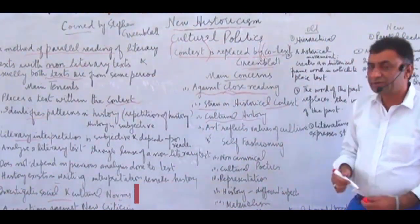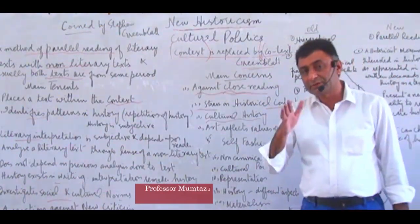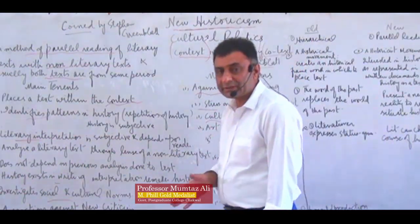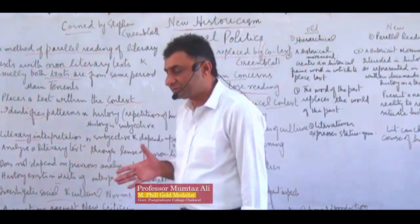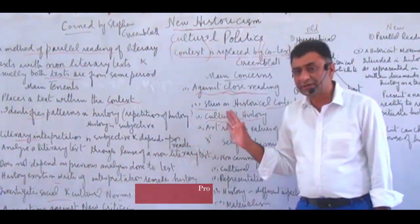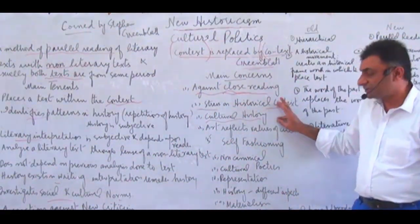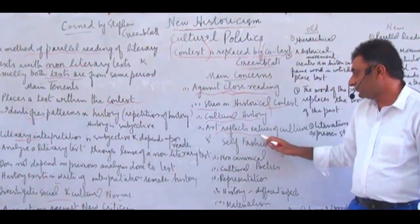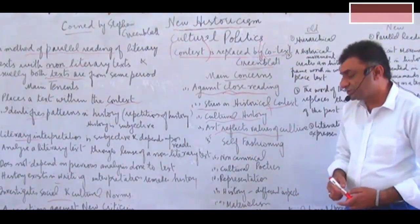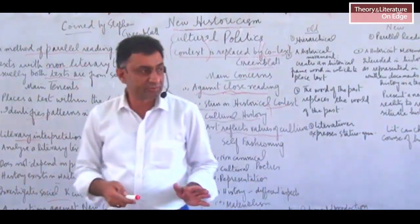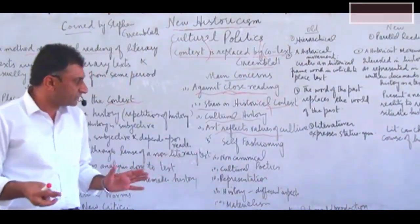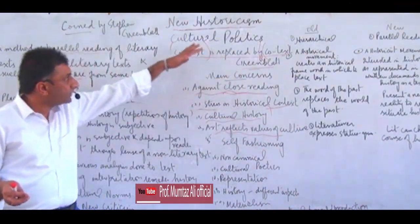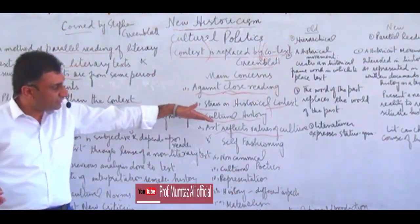Cultural history is another key concept. Culture means the way of living and thinking of people. When people live, think, and behave in a certain manner, culture comes into existence and moves with the passage of time — that is called cultural history. Art reflects the values of culture. Culture is a judicious combination of different norms, values, and many things, and according to New Historicism, art reflects those cultural values.